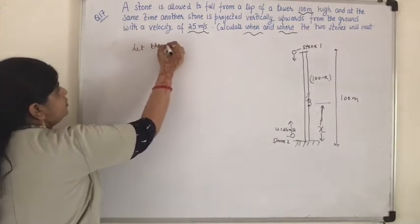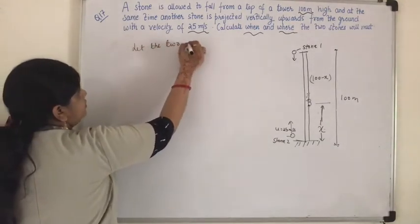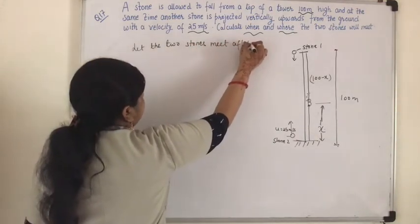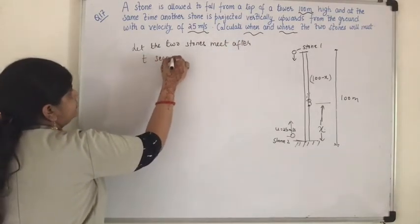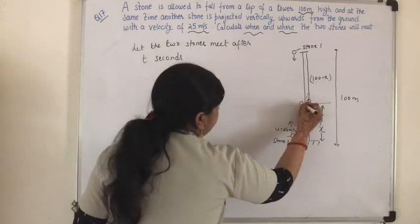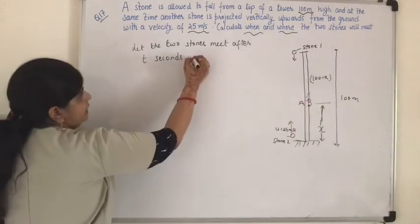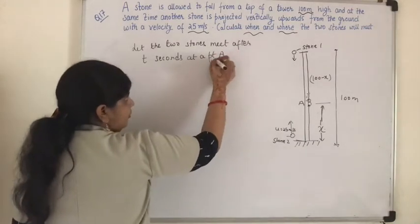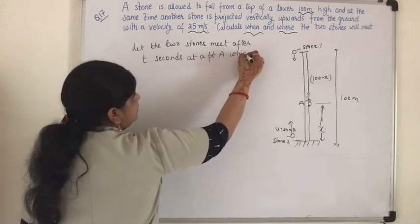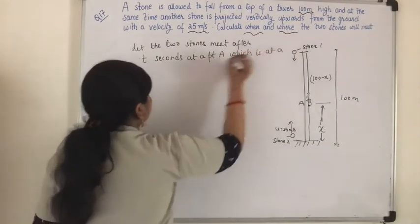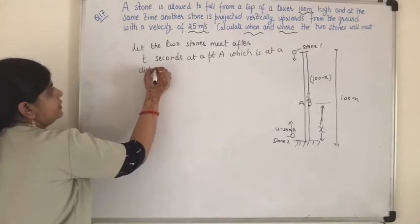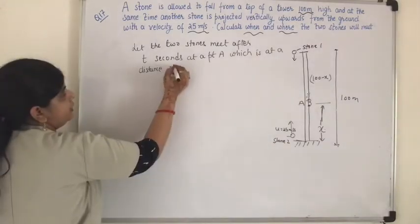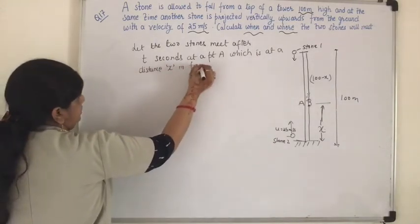Let the two stones meet after t seconds at a point A, which is at a distance x meters from the ground.